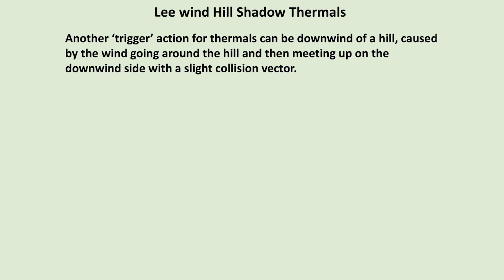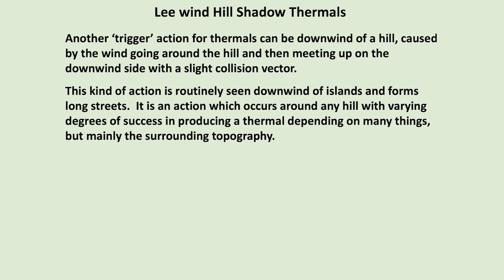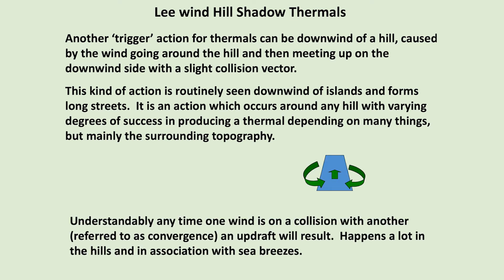Lee Wind Hill Shadow Thermals. Another trigger action for thermals can be downwind of a hill, caused by the wind going around the hill and then meeting up on the other side with a slight collision vector — in other words, convergence. This kind of action is routinely seen downwind of islands and forms long streets. It occurs around any hill with varying degrees of success in producing a thermal, depending on many things, but mainly the surrounding topography and the angle of the sun. Any time one wind is on a collision with another — referred to as convergence — an updraft will result. It happens a lot in the hills and in association with sea breezes.